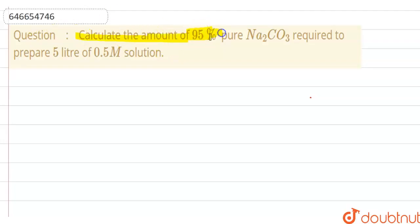Calculate the amount of 95% pure Na2CO3 required to prepare 5 liters of 0.5 molar solution.